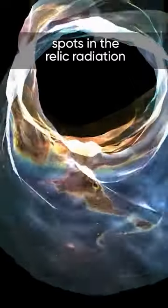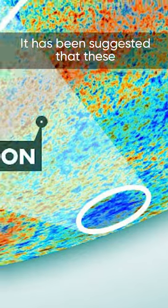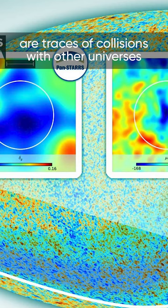However, there are unexplained spots in the relic radiation. It has been suggested that these are traces of collisions with other universes.